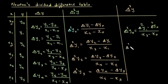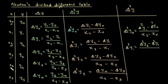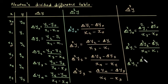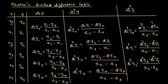For the third divided differences: Δ³y₀ = (Δ²y₁ minus Δ²y₀) divided by (x₃ minus x₀). Next, Δ³y₁ = (Δ²y₂ minus Δ²y₁) divided by (x₄ minus x₁). And Δ³y₂ = (Δ²y₃ minus Δ²y₂) divided by (x₅ minus x₂).